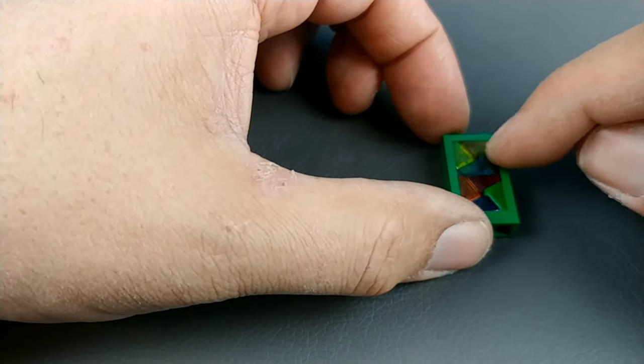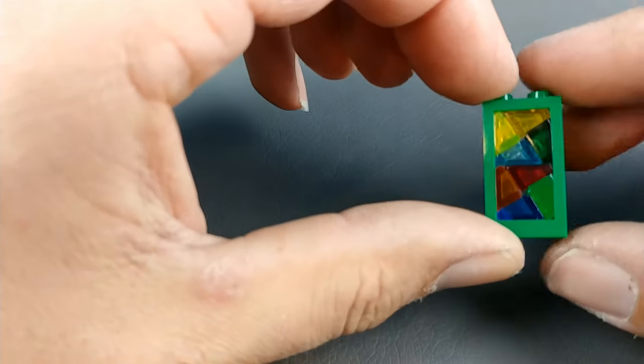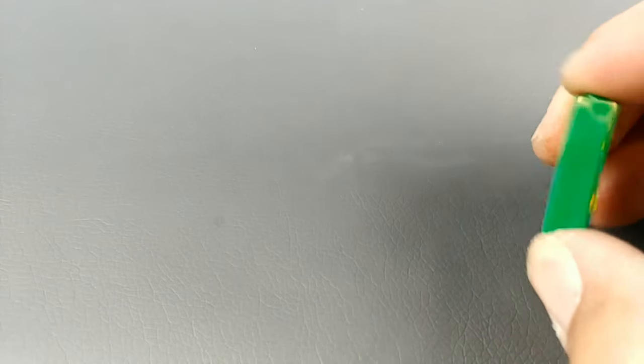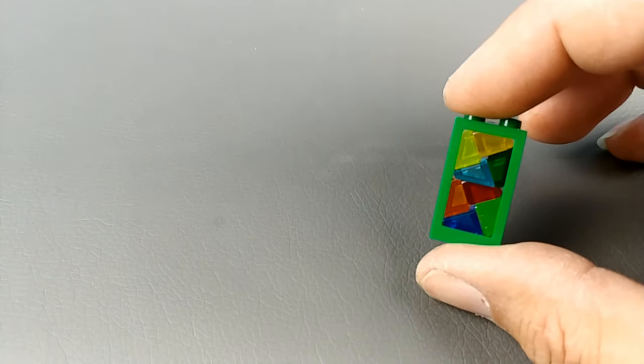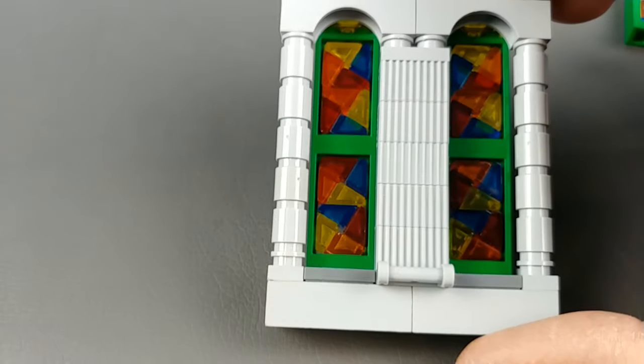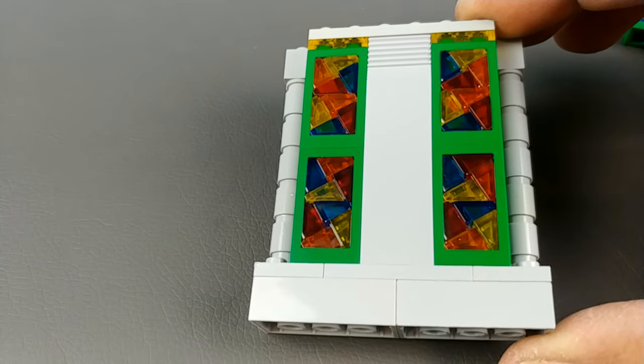And that gives you a stained glass window and I think it is just a beautiful technique. The awesome part about it is it doesn't matter if you're on the inside or the outside of the building, it really looks good. It's a nice finished product for somebody that wants to do MOCs and wants to have the window glass be decorative from both the inside and outside of the building.